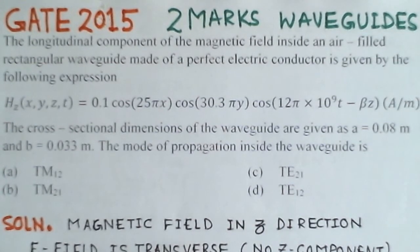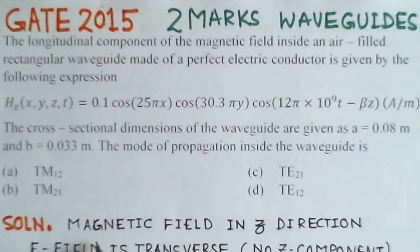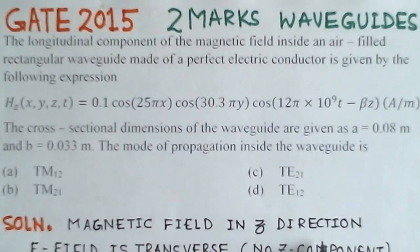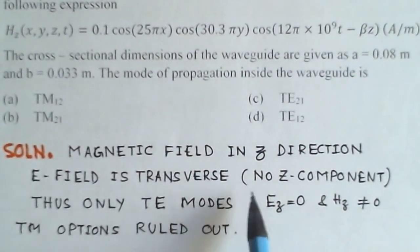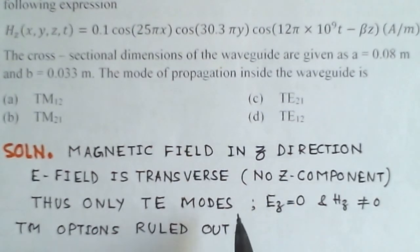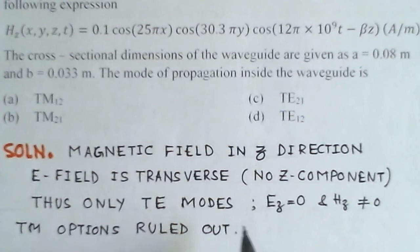We need to find the mode that propagates in the rectangular waveguide whose magnetic field component is given. What we notice here is that the magnetic field is in the Z direction. This indicates that the electric field is transverse to the direction of propagation. Therefore, only transverse electric modes will exist. Transverse electric modes have EZ equal to zero and HZ non-zero, which is exactly what we have.